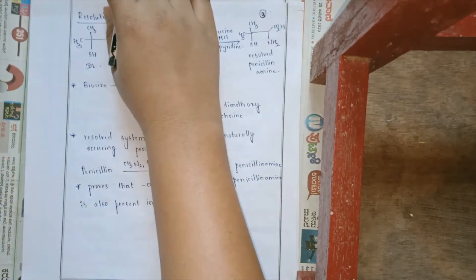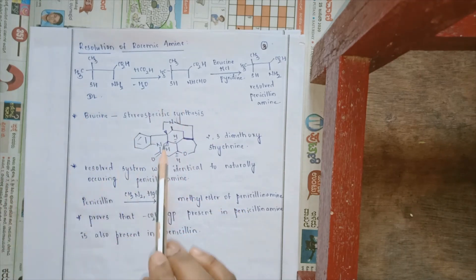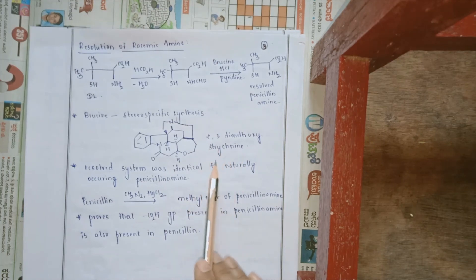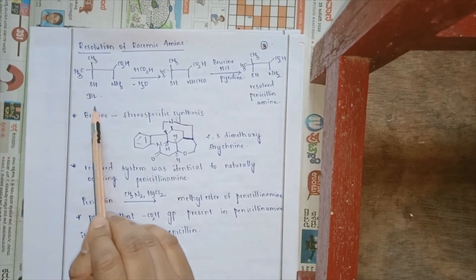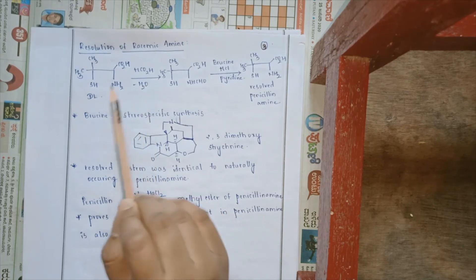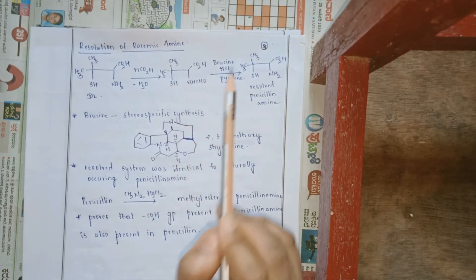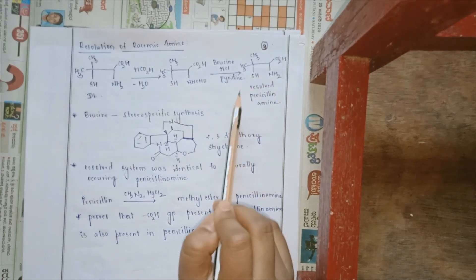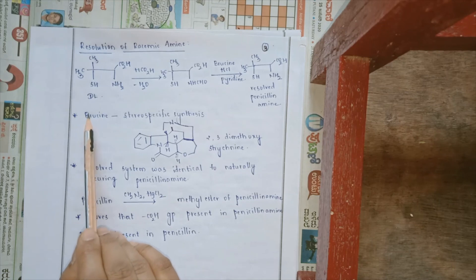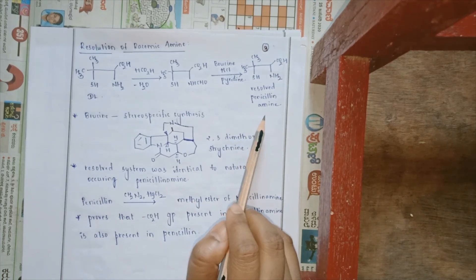Once we get a racemic mixture, there should be resolution of the racemic mixture. The resolution of the racemic amine can be done by brucine, which is a base used for stereospecific synthesis. Brucine is 2,3-dimethoxystrychinine. When DL-penicillin amine is treated with formic acid, N-formylation takes place — the lone pair on nitrogen attacks the carbonyl carbon of formic acid. This N-formylated amine in the presence of brucine, HCl and pyridine gives resolved penicillin amine. Using D-brucine gives the D system; using L-brucine gives the L system, yielding a fully resolved penicillin amine.